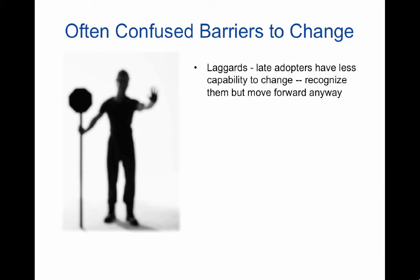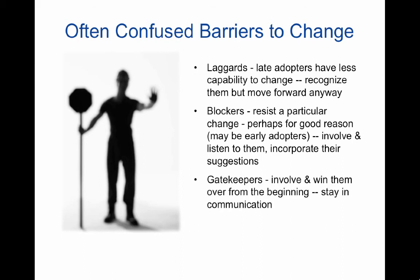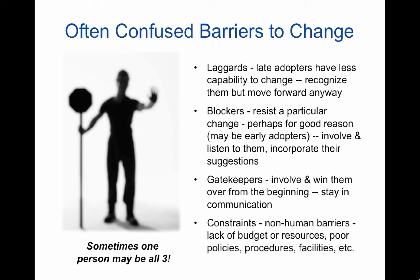There are often confused barriers to change. Laggards or late adopters have less capability to change — recognize them and move forward anyway. Blockers, however, are different; they actually resist a particular change, perhaps for a good reason. They may even be early adopters, so it's important to listen to them and incorporate their suggestions. Gatekeepers are also important — involve and win them over from the beginning and stay in communication. What's unfortunate is that one person may be all three: a laggard, a blocker, and a gatekeeper — then you've got a real problem. Constraints are non-human barriers such as lack of budget, resources, poor policies, procedures, and facilities, and they can also create barriers to change.